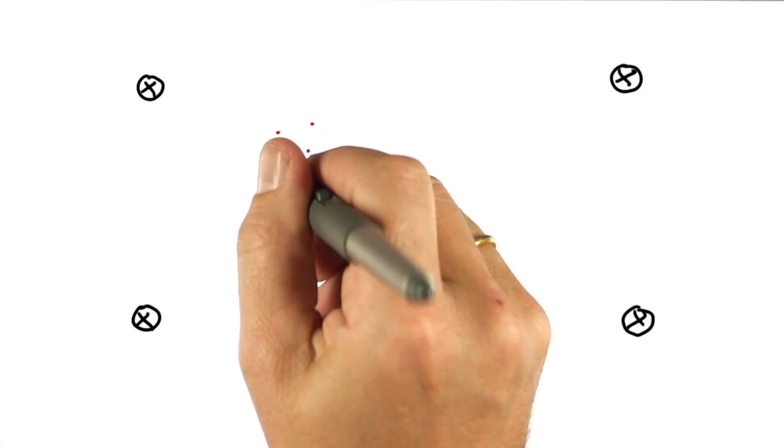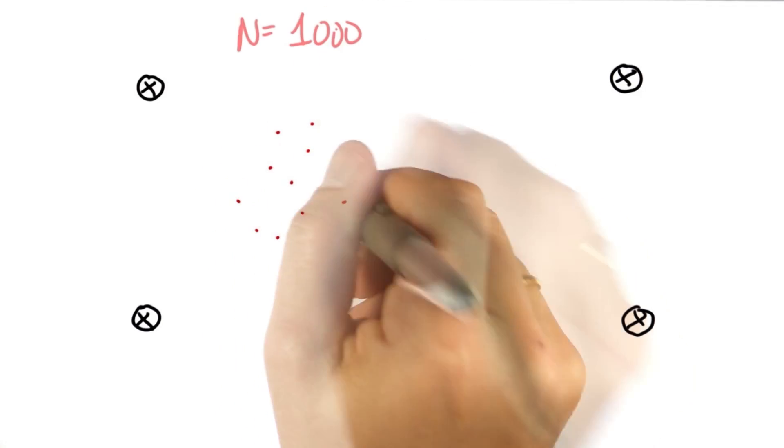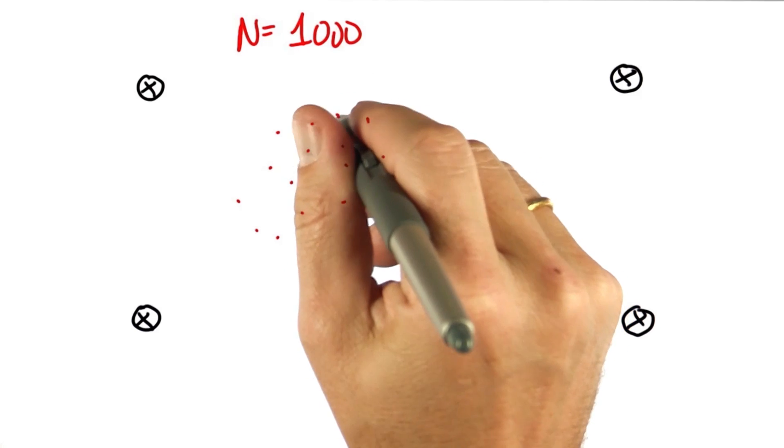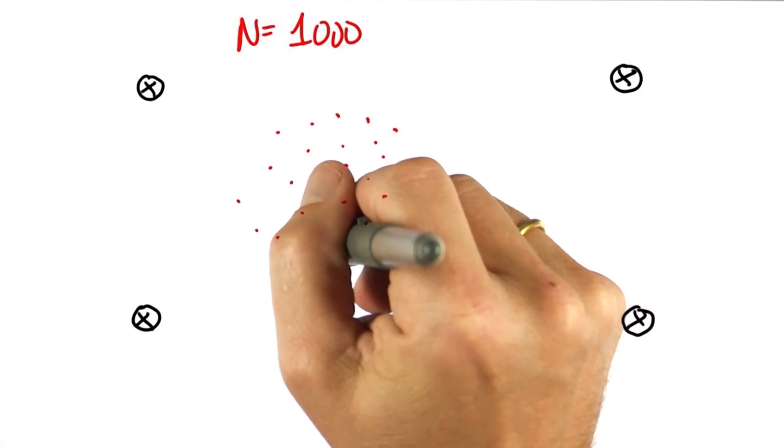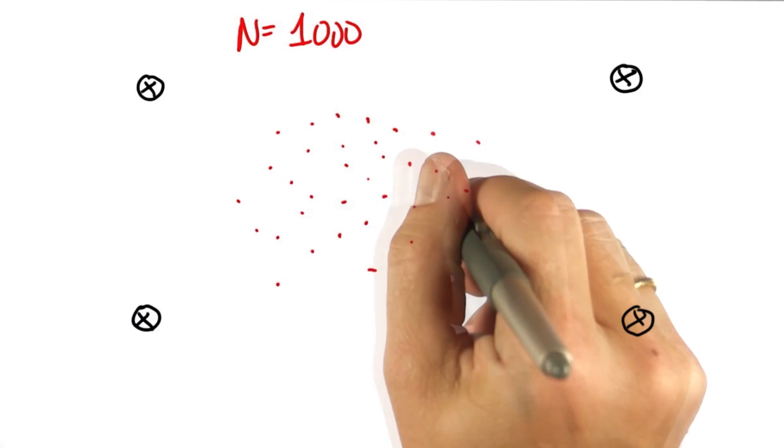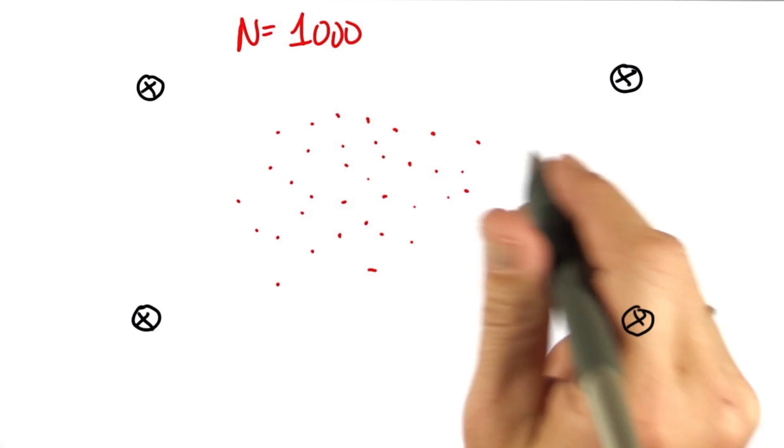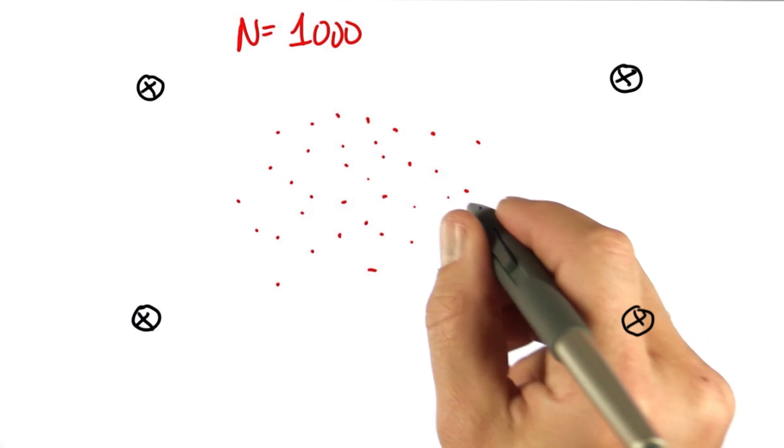The particle filter that we're going to program maintains a set of 1,000 random guesses as to where the reward might be. Now, I'm not going to draw 1,000 dots here, but let me explain how each of these dots looks like.